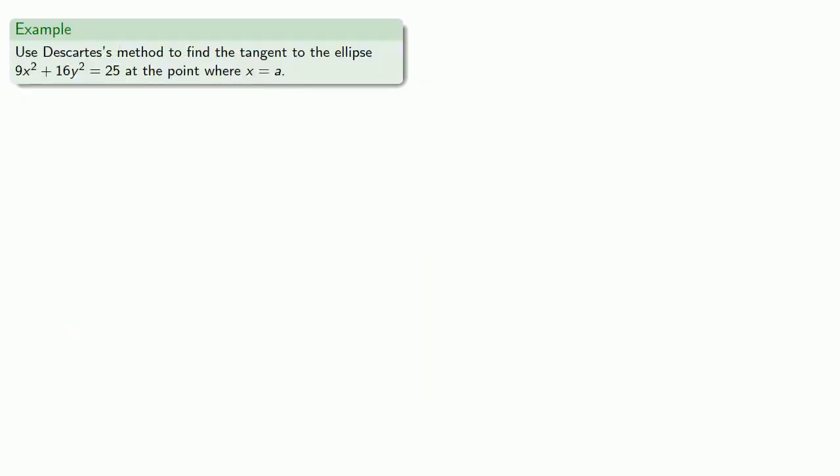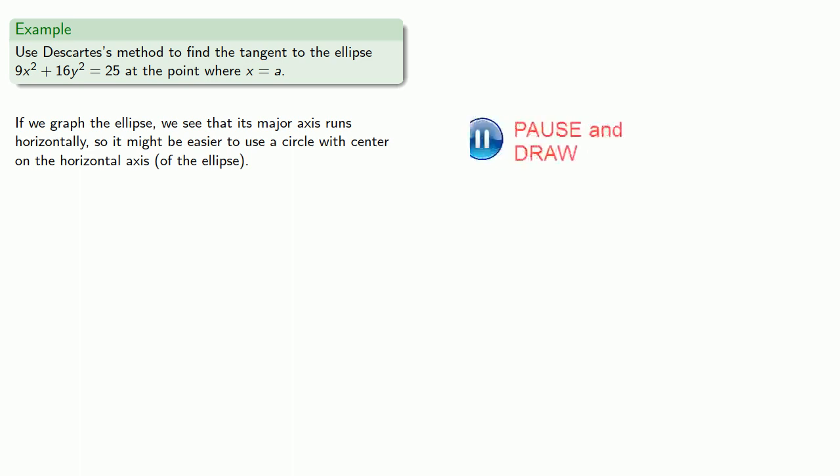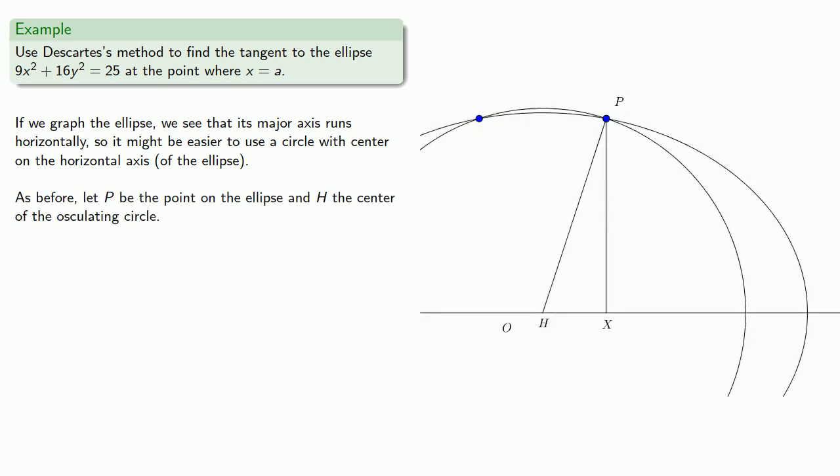Or let's use Descartes' method to find the tangent to the ellipse, 9x squared plus 16y squared equals 25, at the point where x is equal to a. So if we graph the ellipse, we see that its major axis runs horizontally, so it might be easier to use a circle with center on the horizontal axis of the ellipse. As before, let p be the point on the ellipse, and h the center of the osculating circle. Let px be the line drawn ordinate-wise, and let ox equals x, px equals y, and oh equals s.